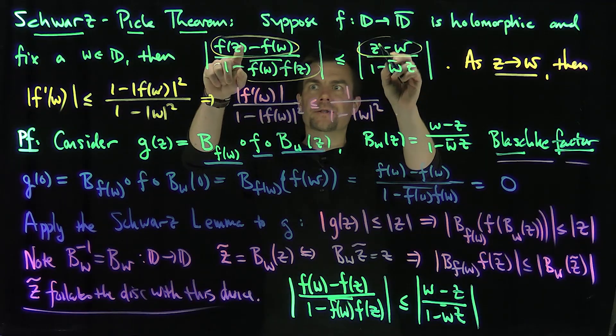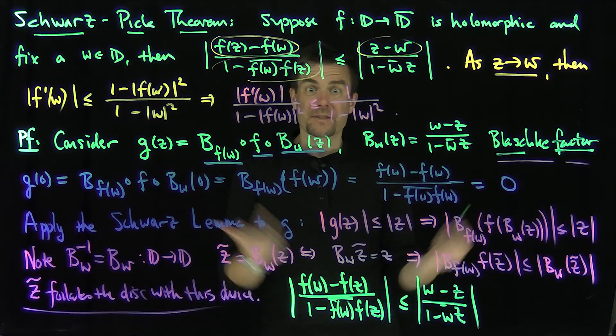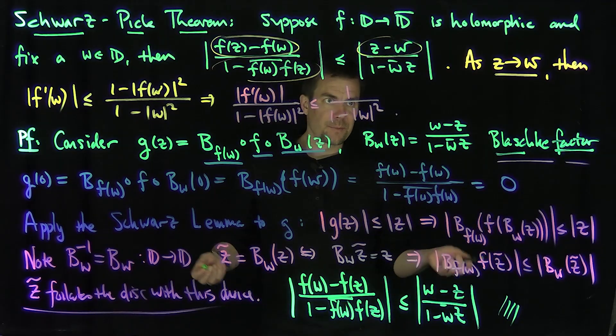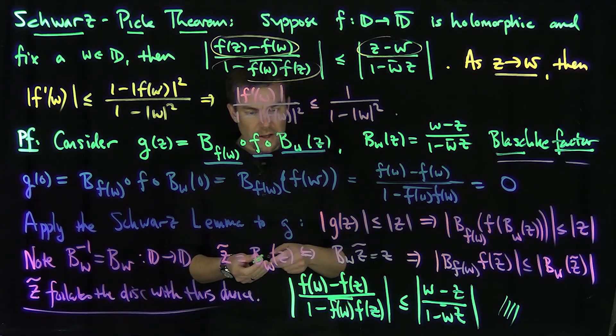Now I have the numerators in here flipped, but I can pull out a negative sign and it works. So that gives me the proof of the Schwartz-Pick lemma.